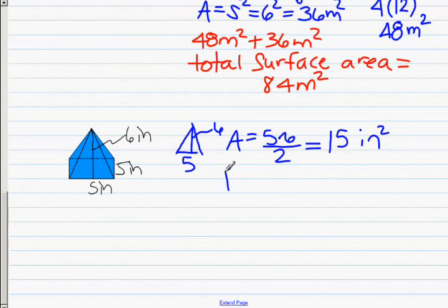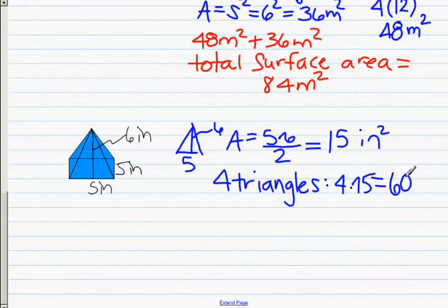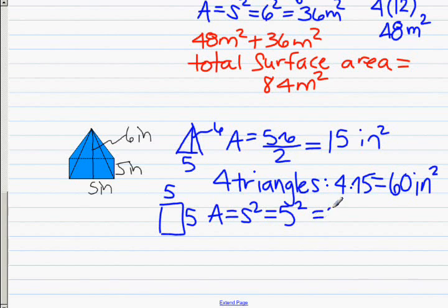But we have 4 triangles, and that will be 4 times 15, which is 60 inches squared for the faces of the triangles. And then the base, again, we have a square base, so it's 5 by 5. The area of that will be the side squared equals 5 squared, which is 25 inches squared.